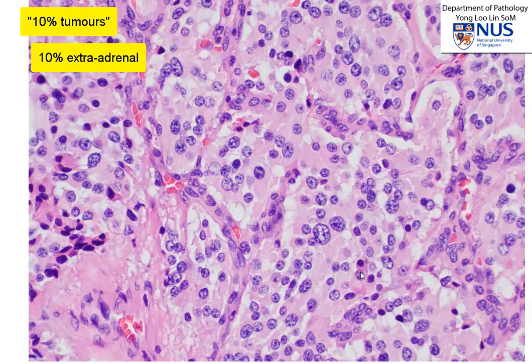The other 10% feature is that about 10% of adrenal pheochromocytomas are malignant. It's very difficult to actually determine malignancy by looking at the tumors microscopically. Sometimes tumors which have metastasis can actually appear very bland. So the real true determinant of malignant behavior is actually the presence of metastatic disease. The risk of malignancy is actually higher in paragangliomas or in extra-adrenal tumors.